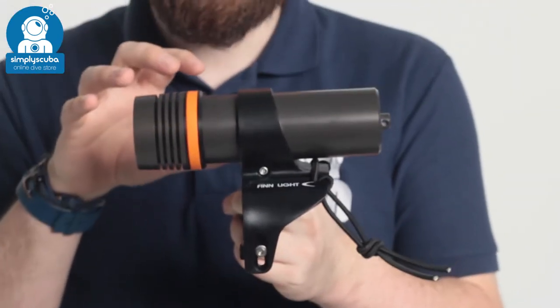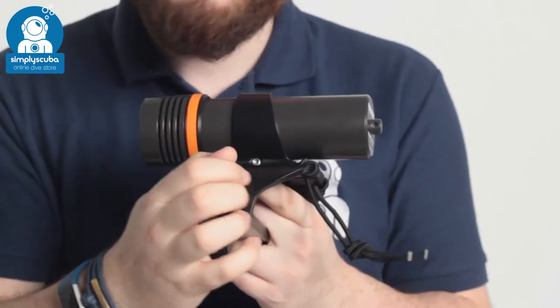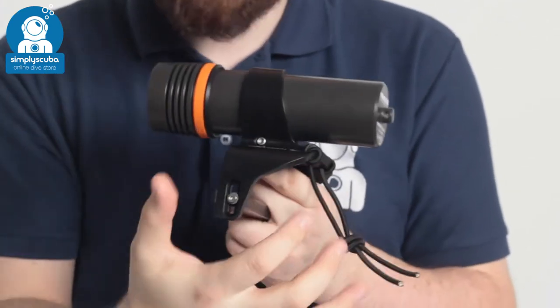This is a compact torch. It's wrist mounted, comes as standard with this Goodman style handle, but you can remove that and it's fully adjustable.